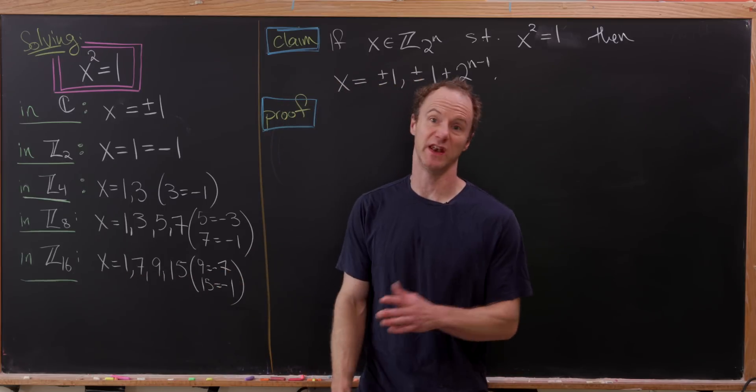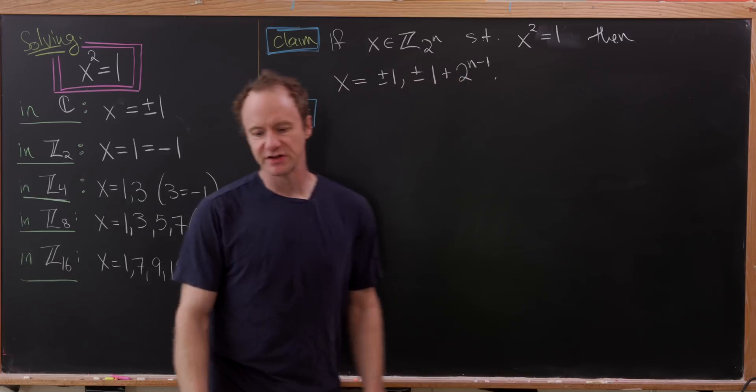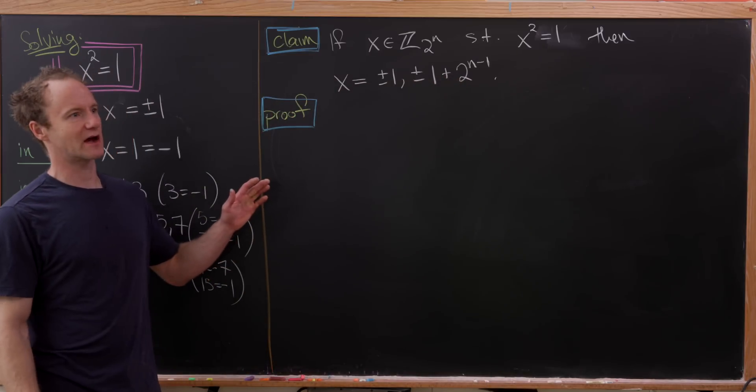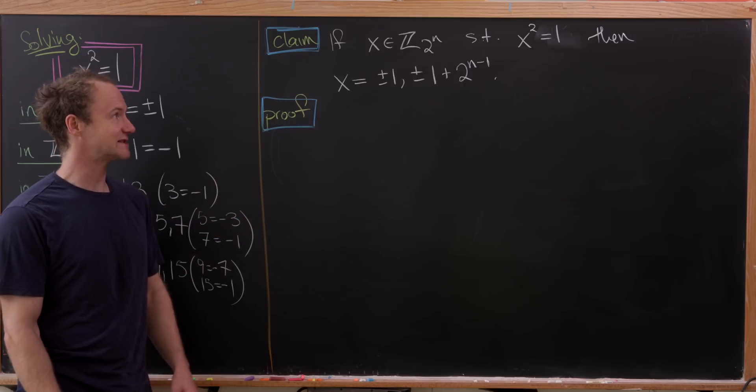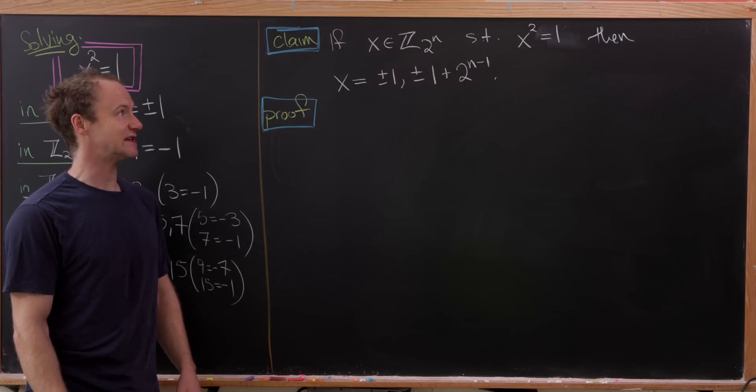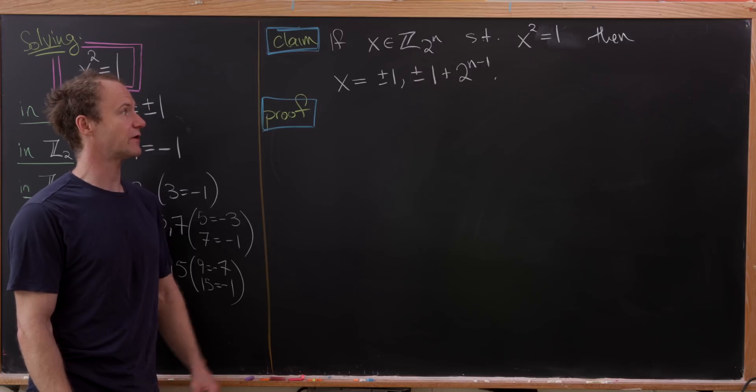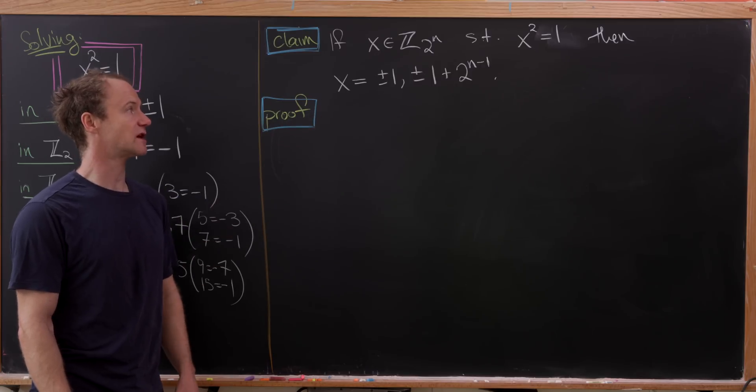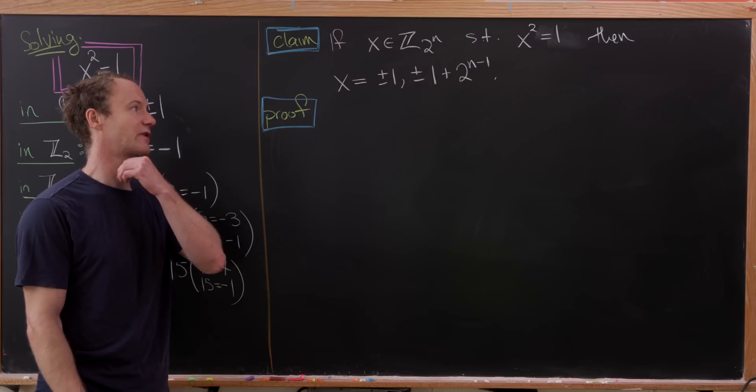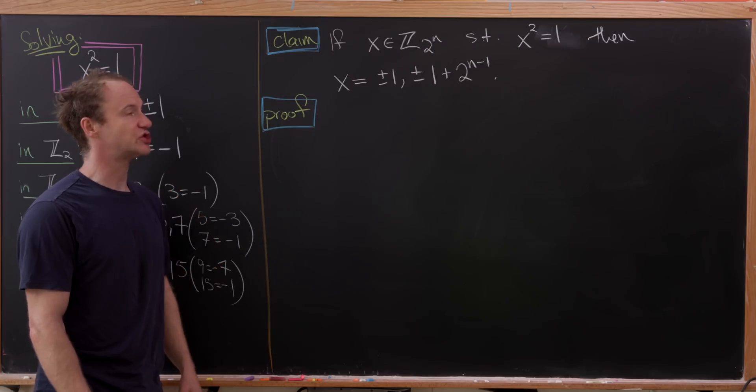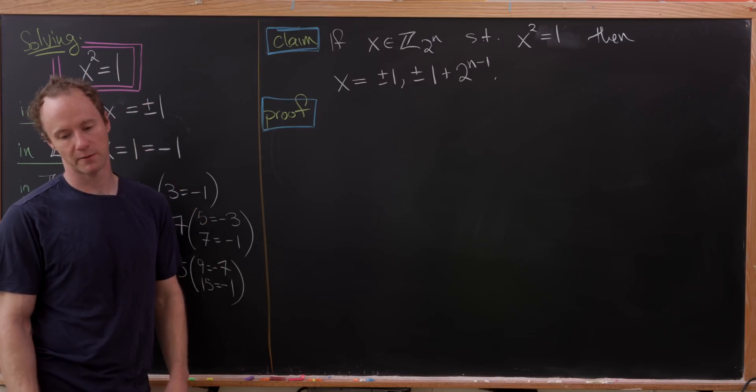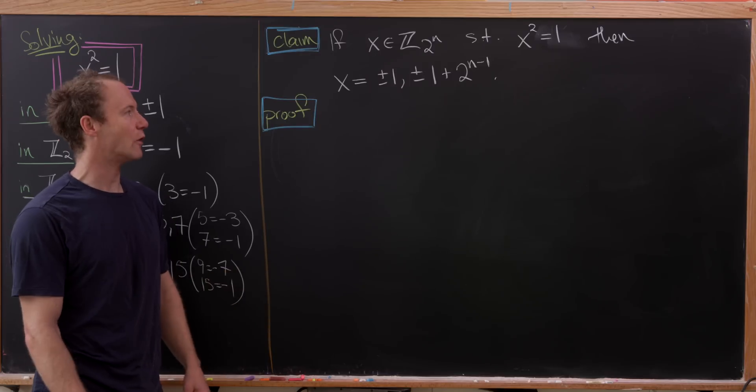And then after that, you just pick up all the negatives of that. So that being said, we can write that down generally and carefully as if x is in ℤ₂ⁿ, then x² = 1 if and only if x = ±1 or ±(1 + 2ⁿ⁻¹). Okay, so let's see how we can do this.